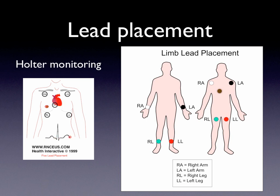For stress testing, the placement of V1 through V6 chest electrodes is the same as for a 12-lead EKG. However, the limb leads are placed up on the thorax itself so that the patient can move and walk appropriately. If the leg electrodes were actually on the legs while the patient is walking, that would produce a wandering baseline and significant somatic or muscle motion interference.